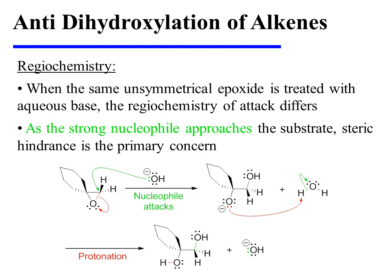When the same unsymmetrical epoxide is treated with aqueous base rather than aqueous acid, the regiochemistry of the attack differs. In this instance, we are dealing with a strong nucleophile — hydroxide — and as this strong nucleophile approaches the substrate, it finds it easier to attack at the less hindered center. That's the less highly substituted center, which in this instance happens to be primary. So hydroxide attacks this primary carbon of the epoxide, breaking open the carbon-oxygen bond. That affords an alkoxide intermediate, which removes a proton from water to generate the vicinal diol product.